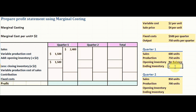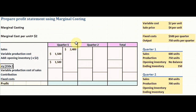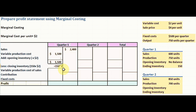Production was 750 units and sales was 600 units, so 750 minus 600 gives an ending inventory of 150 units. We multiply 150 units by $2, the marginal cost per unit, giving a closing inventory of $300.